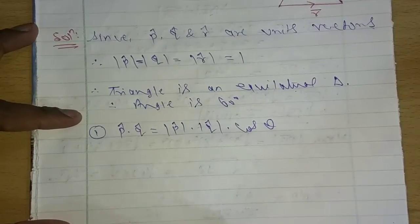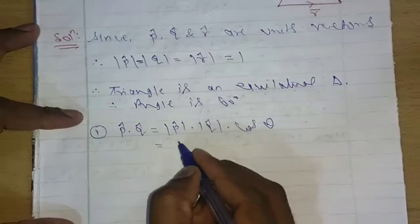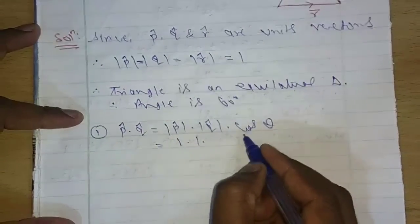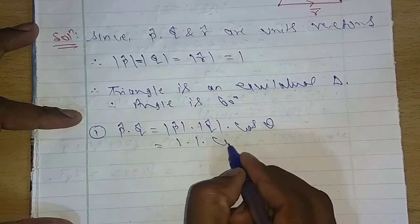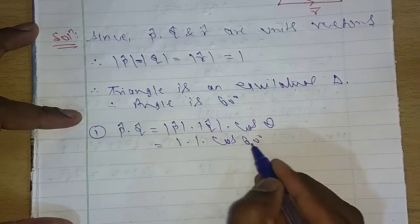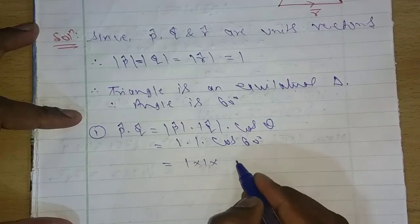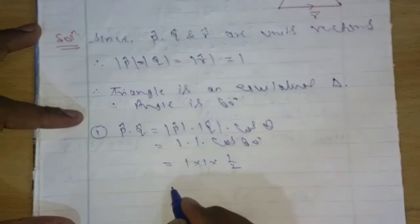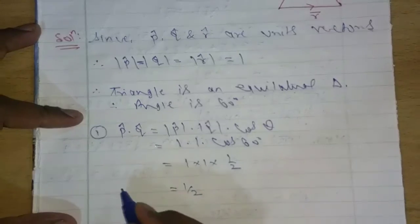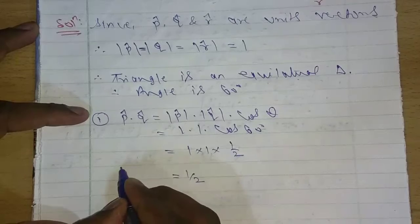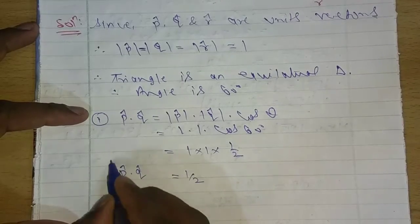What is cos theta? So this value is 1 times cos theta. What is theta here? 60 degrees. So this is equal to 1 times 1 times cos 60, which is 1 by 2. So what is the answer here? 1 by 2. So p cap dot q cap is a half.